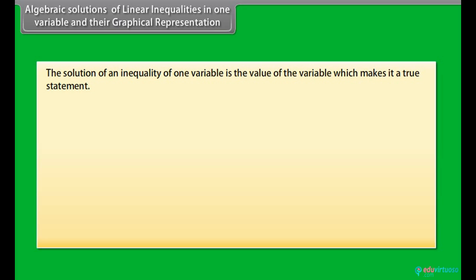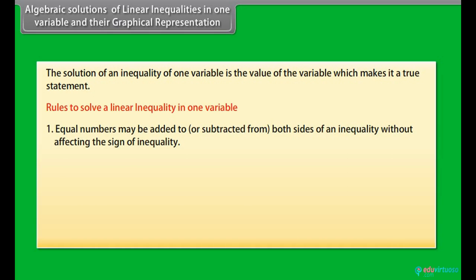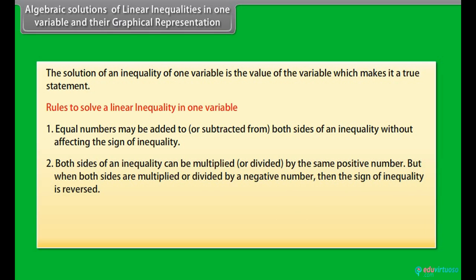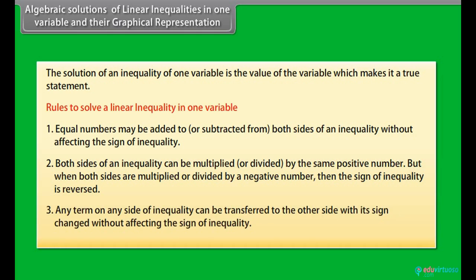Algebraic solution of linear inequalities in one variable and their graphical representation. The solution of an inequality of one variable is the value of the variable which makes it a true statement. Rules to solve a linear inequality in one variable: Rule 1 — Equal numbers may be added to or subtracted from both sides of an inequality without affecting the sign of inequality. Rule 2 — Both sides of an inequality can be multiplied or divided by the same positive number, but when both sides are multiplied or divided by a negative number, the sign of inequality is reversed. Rule 3 — Any term on any side of inequality can be transferred to the other side with its sign changed without affecting the sign of inequality.